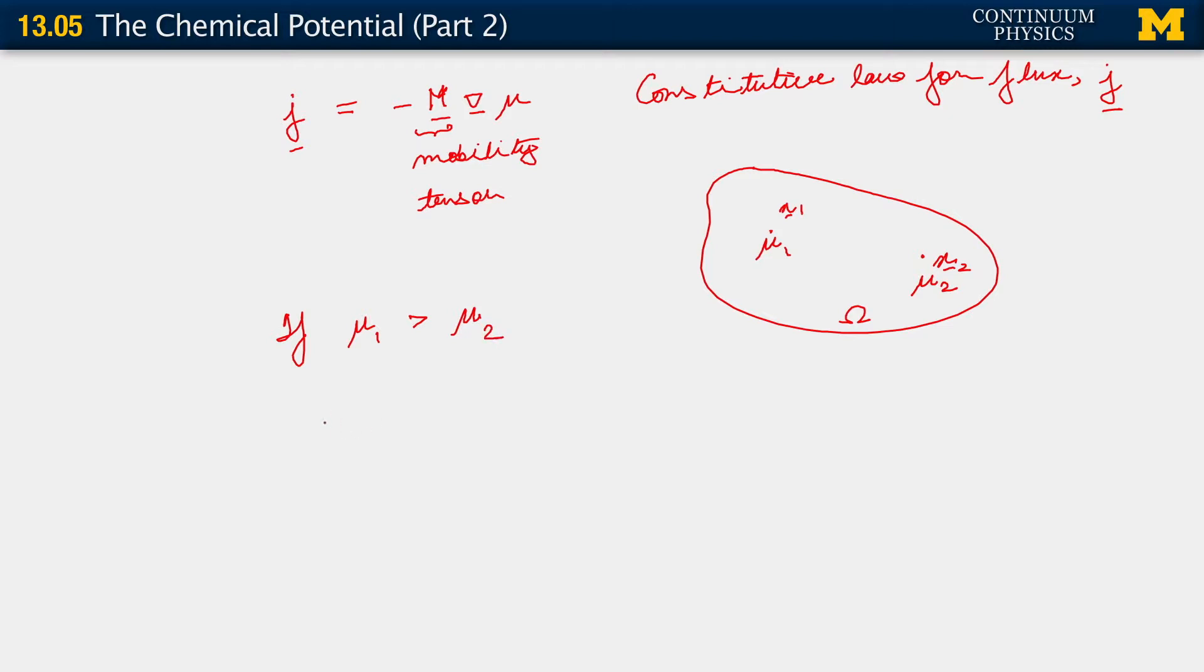What this tells us is that mu 1 equals derivative of chi with respect to concentration at x1, and mu 2 is derivative of chi with respect to concentration at x2.